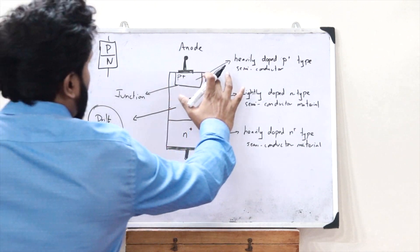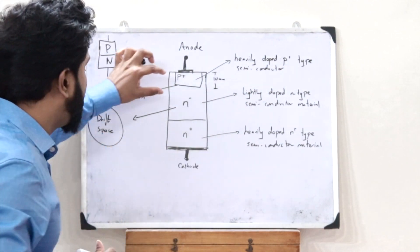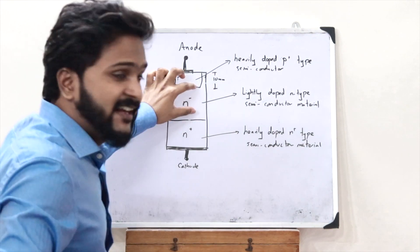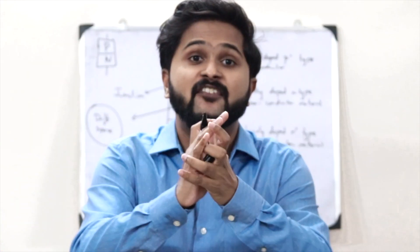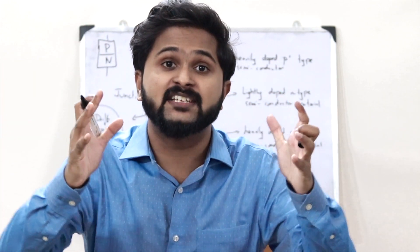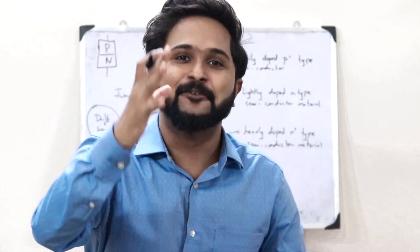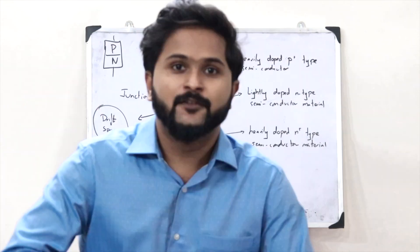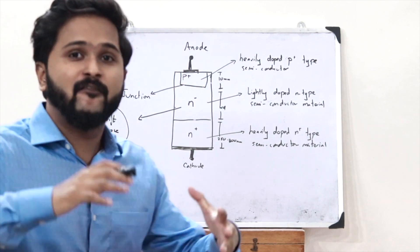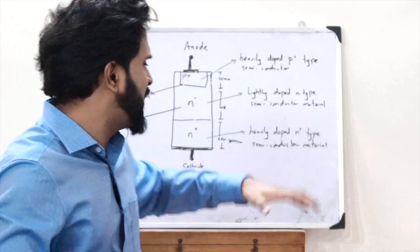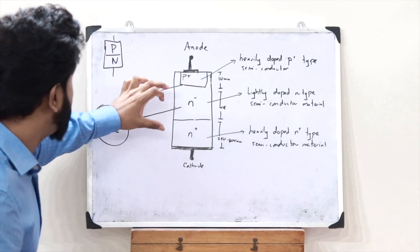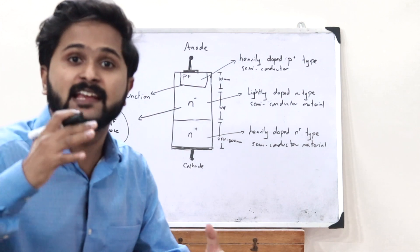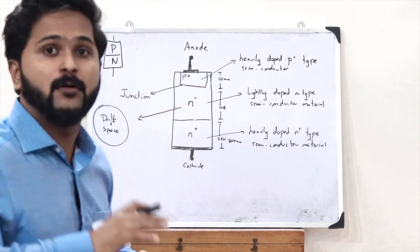The thickness of the P-plus region is given as 10 millimeters. Next, the thickness of the drift space — that thickness can be varied with respect to the breakdown voltage that we require in the reverse biased condition. This is denoted as WD. The depletion layer width contributes to the high power handling capability of this particular power diode.